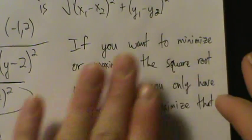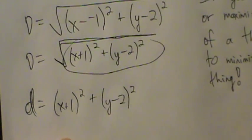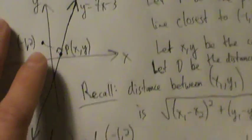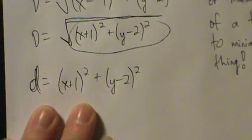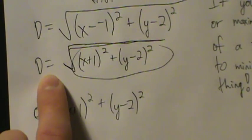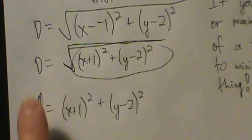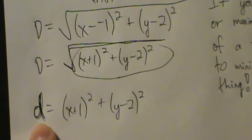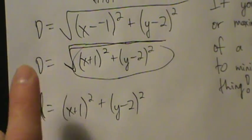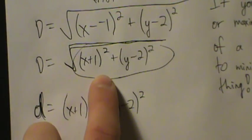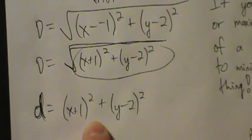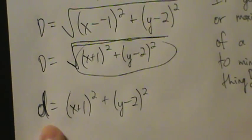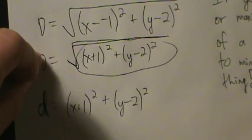So let little d equal (x plus 1) squared plus (y minus 2) squared — that's going to make things much easier. We're not asked to find the minimum distance itself, so be careful: if we are asked to find the actual distance, we have to go back to big D, not little d. Big D gives us the actual distance; little d is just a tool to help us minimize big D. Because if we minimize little d, then big D is automatically minimized.